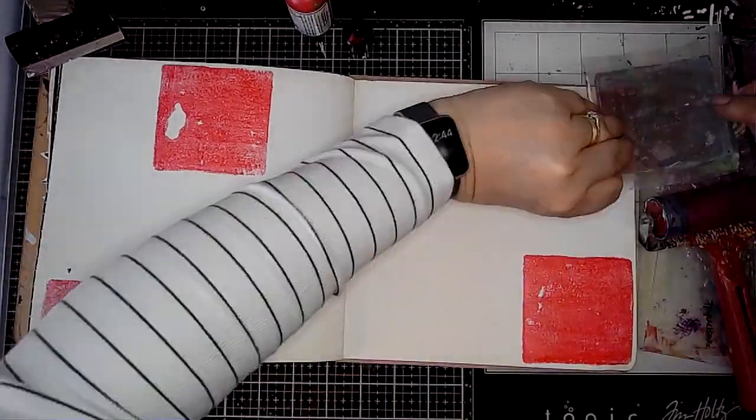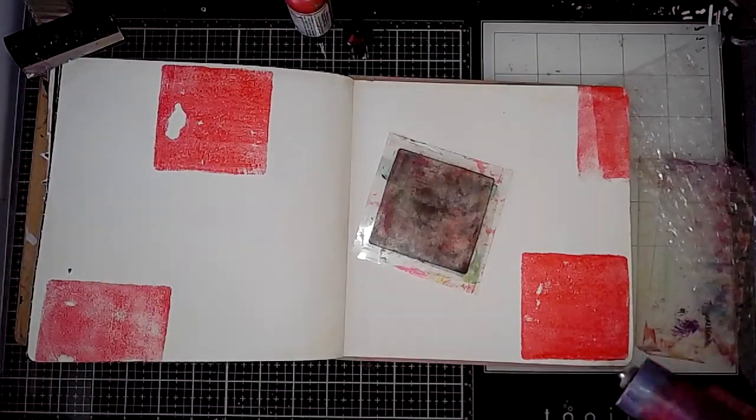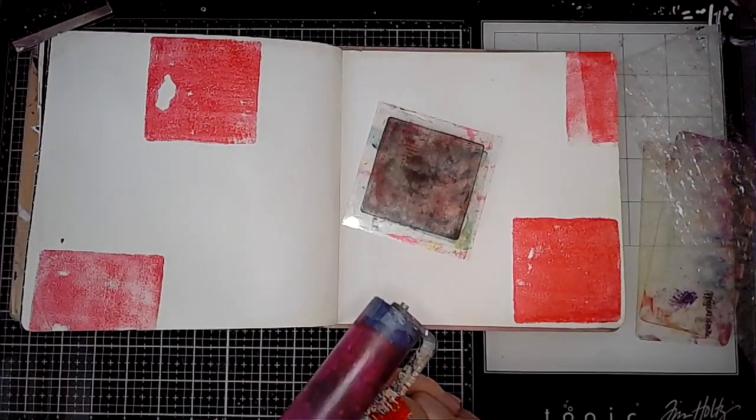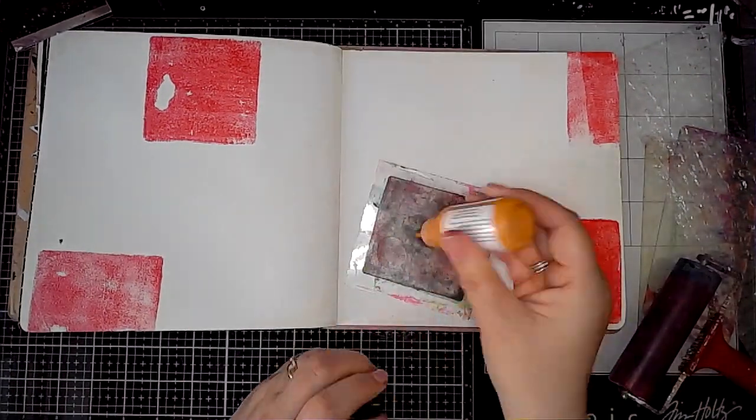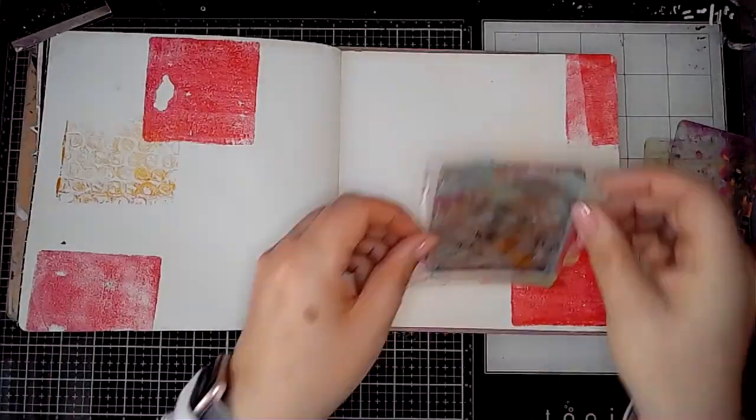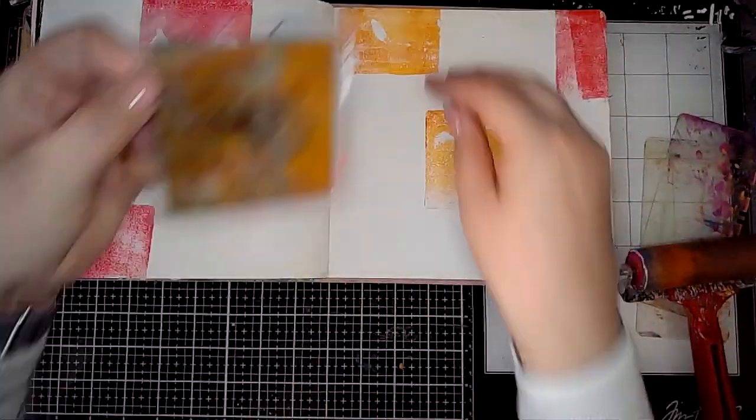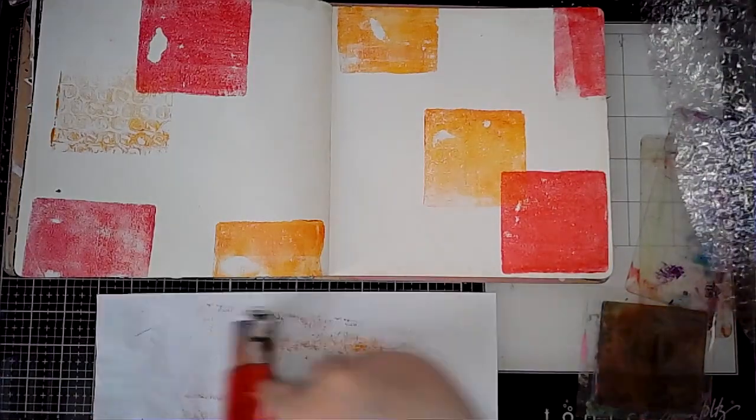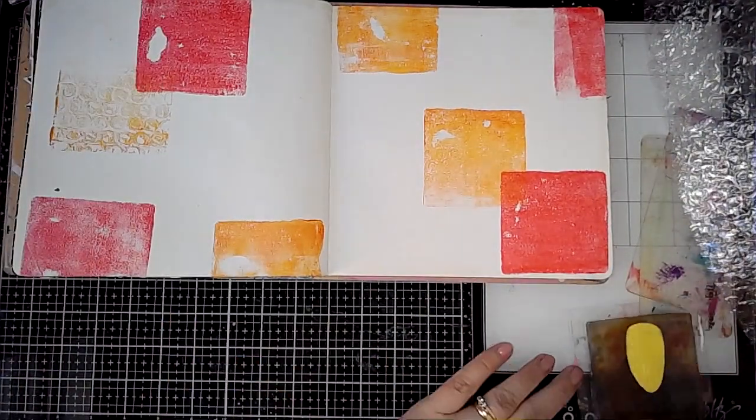So then I'm going to be using this square gel plate from the mini set and I'm just going to start layering over some colors. So I've started off with Dina Wakeley Ruby and then Cheddar and you can see I was just playing about with a bit of bubble wrap there as well.